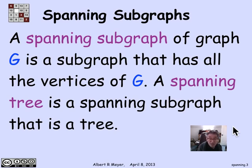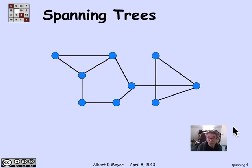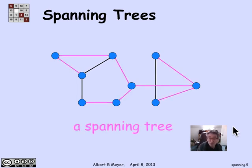Not all graphs are going to have a spanning tree, because the tree has to be connected. If the original graph is not connected, there's no way you can find a spanning tree using only the edges that are there already. But if the graph is connected, it's guaranteed to have a spanning tree. Here's a simple graph, and what I want is a spanning tree — a selection of edges that connect up all the vertices using only edges in the original graph, forming a tree.